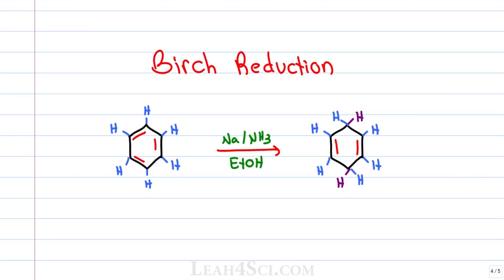Birch reduction is an interesting mechanism because benzene is aromatic — it's very stable due to conjugation — and in this reaction we're breaking that conjugation. We're starting with benzene but ending with a non-aromatic, non-conjugated cyclohexadiene.